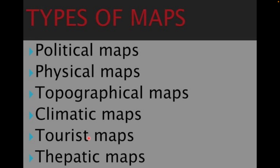Now we come to see what types of maps we usually use. There are two commonly known types — political map and physical map — but actually we have more than these two categories. Others include topographical map, climatic map, tourist map, and thematic map. So these are all the types of maps.